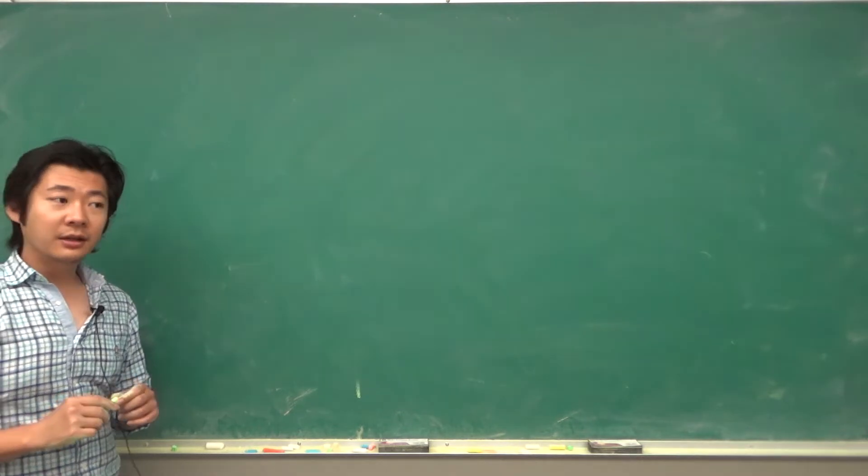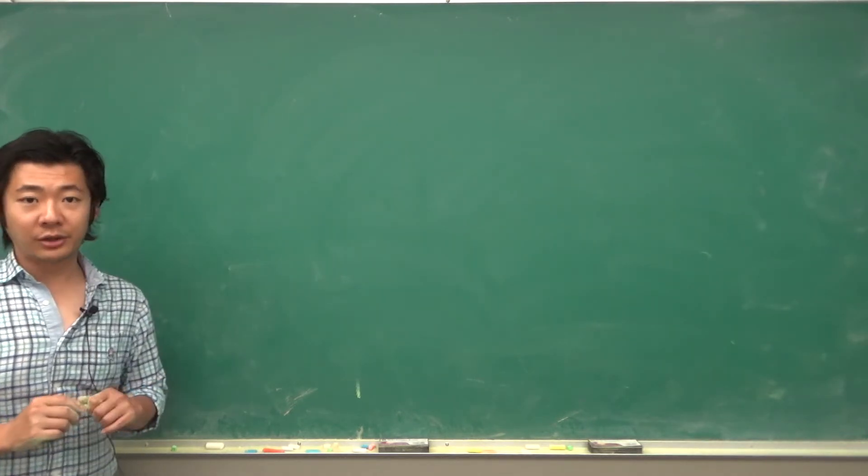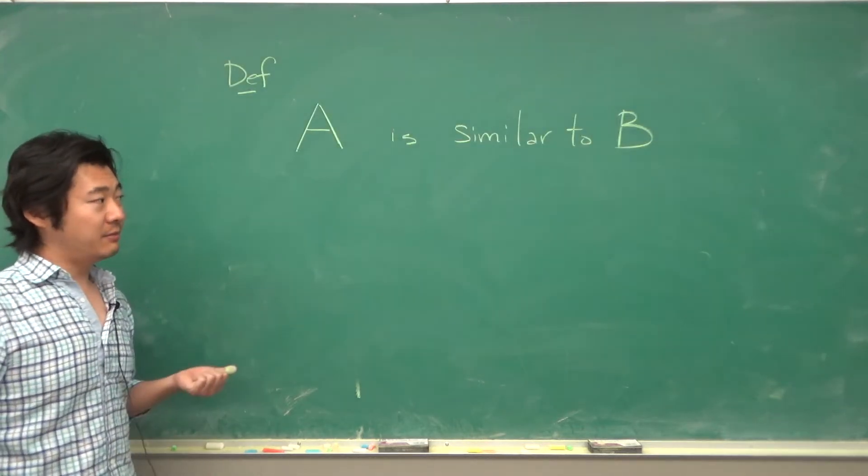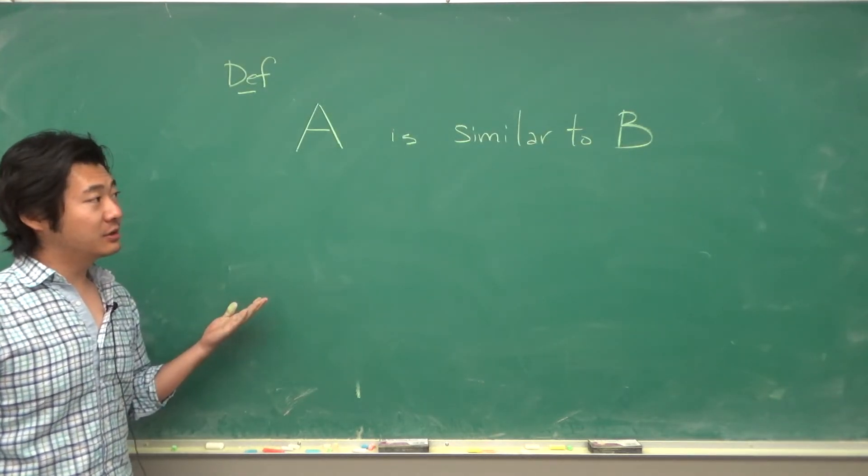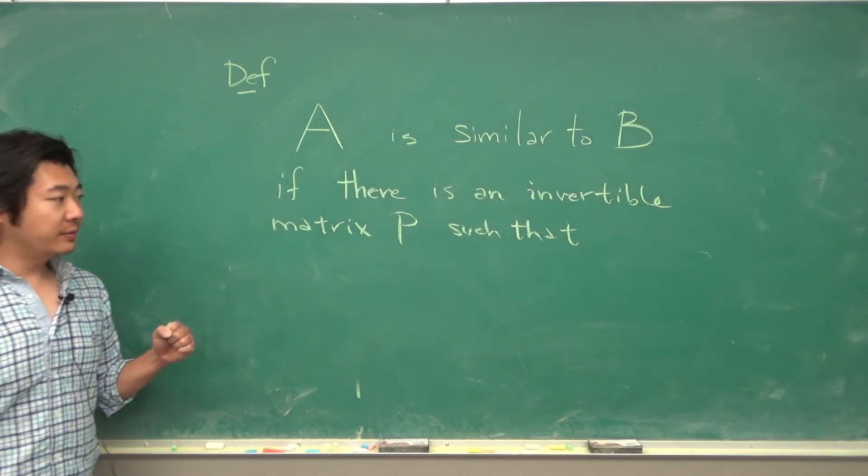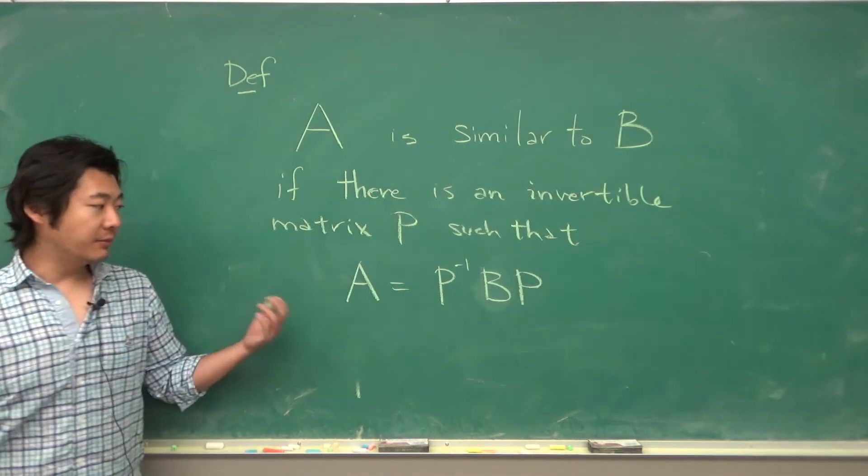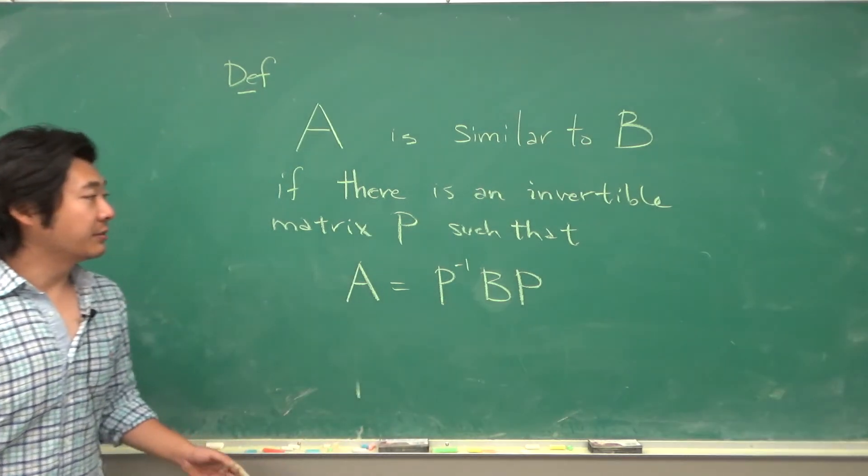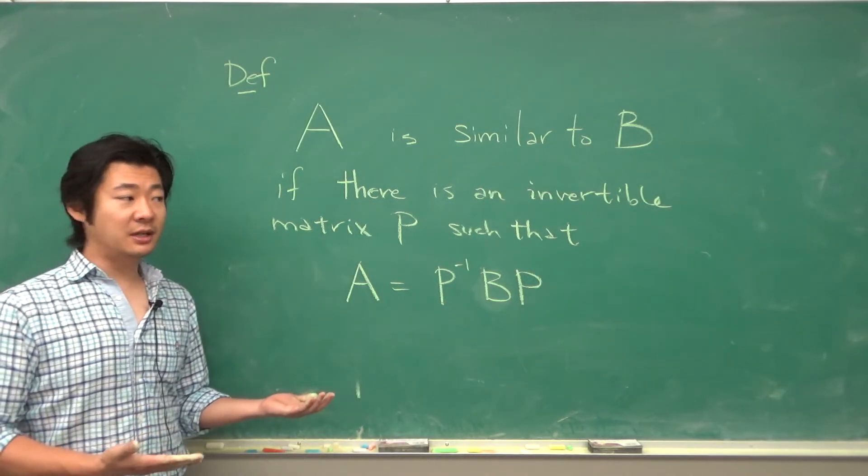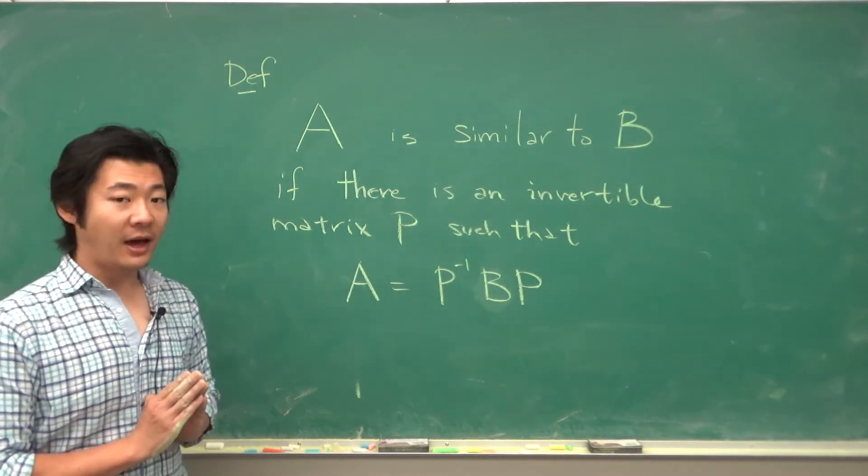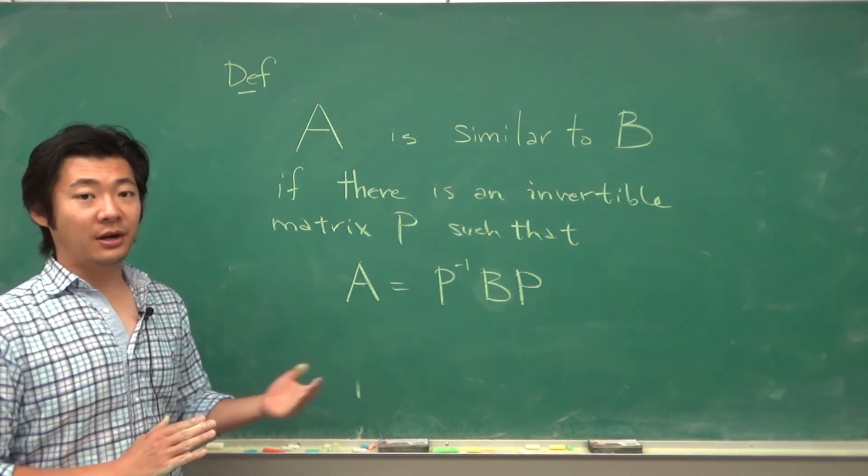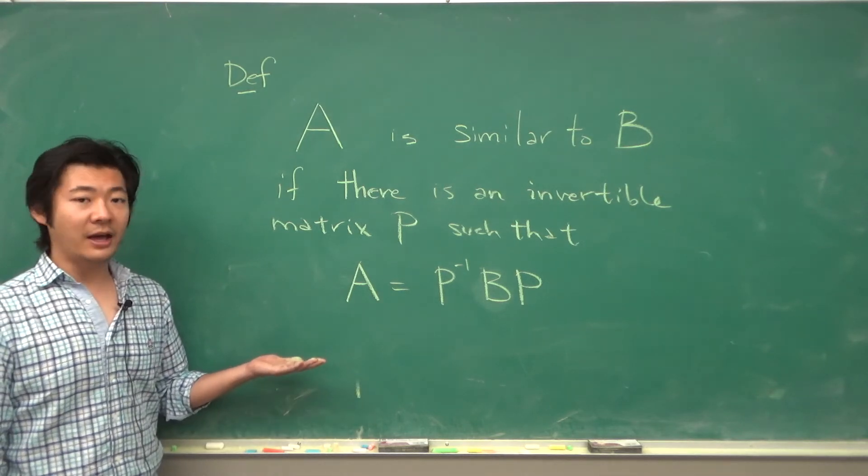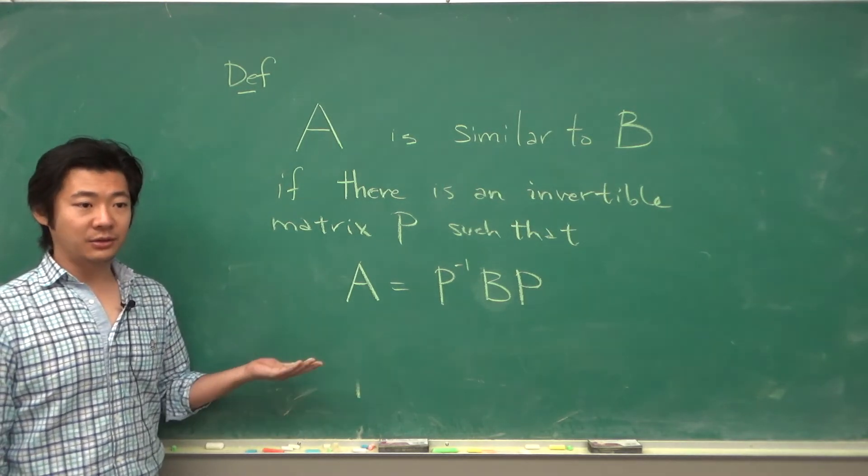Before we move on let me introduce one new terminology called similarity. So if we have square matrices A and B we say A is similar to B if there is an invertible matrix P such that the matrix A is equal to P inverse times B times P. Now something special about similar matrices is that they have the same eigenvalue and they have the same characteristic equation. And this will come in handy when we want to apply eigenvectors and eigenvalues to other things.